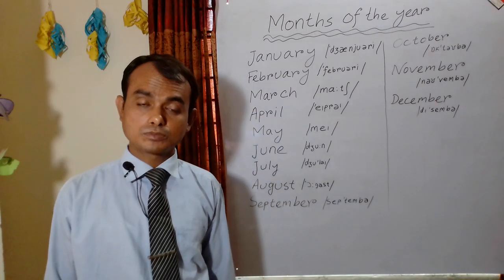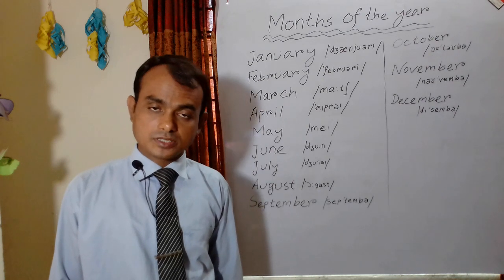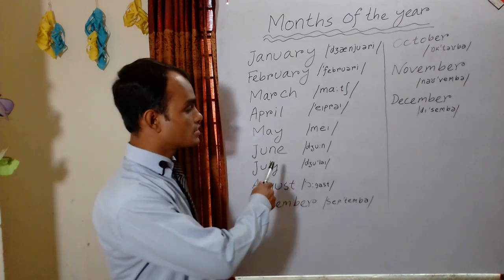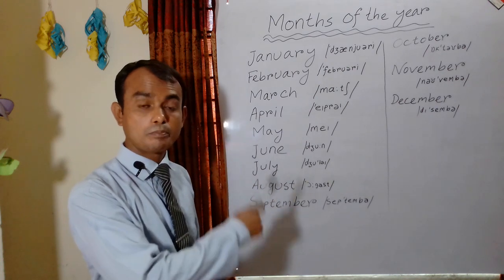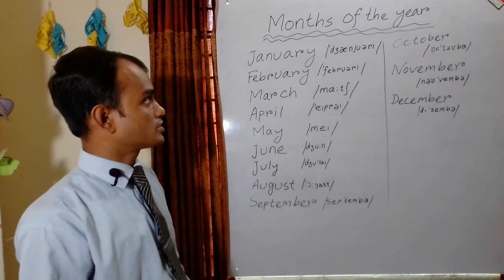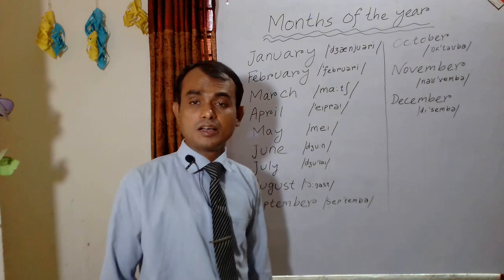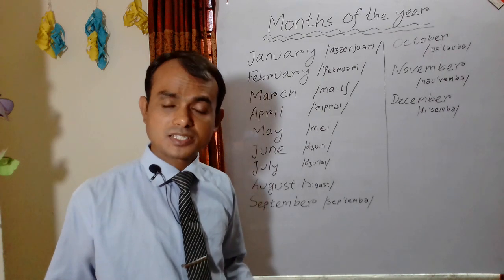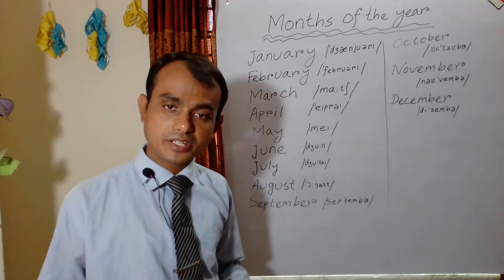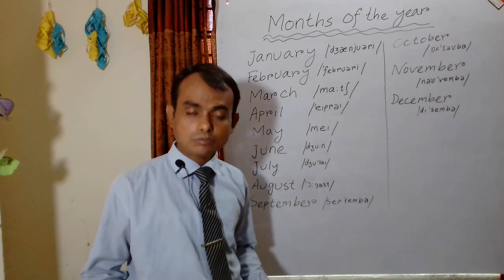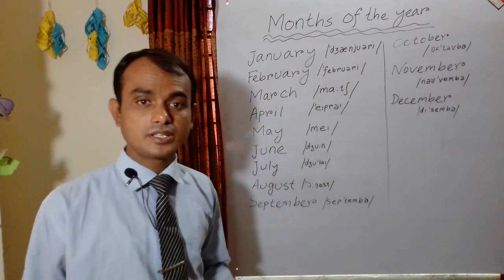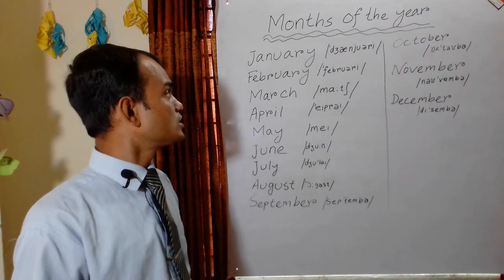Bismillahirrahmanirrahim. Assalamu alaikum. I am Mohammad Moshir Rahman. Dear viewers, all of my videos have been created linking to one another. If you would like to understand this present video more clearly, you have to watch the previous ones. Okay, let's come to the point. Dear students, there are 12 months in a year. Some students do not know how to pronounce the 12 months of the year in English accurately. Today I am going to teach you how to pronounce those 12 months of the year accurately.